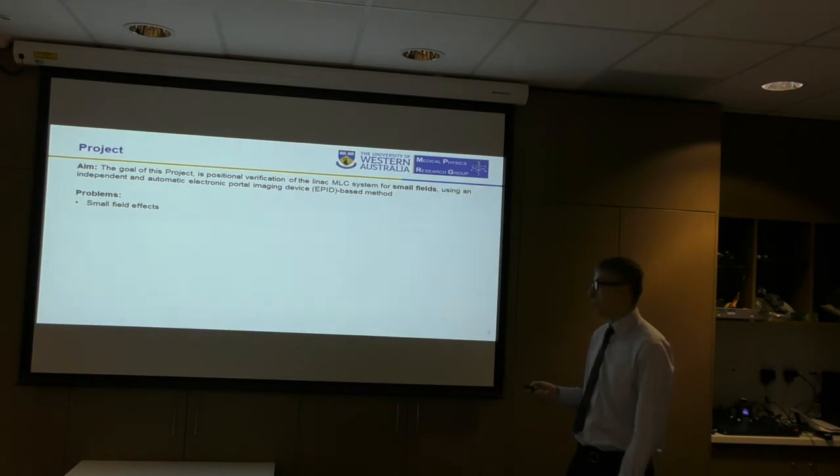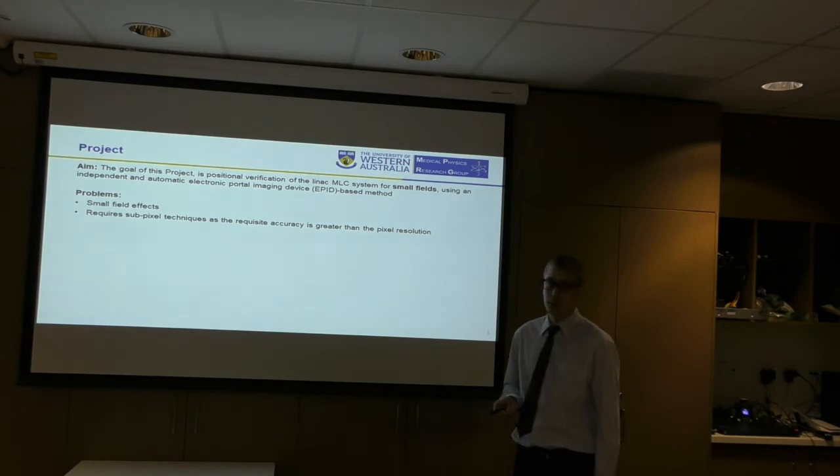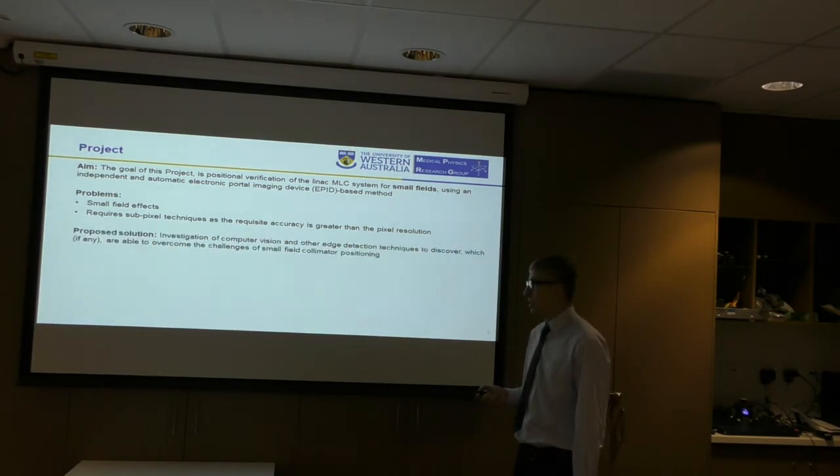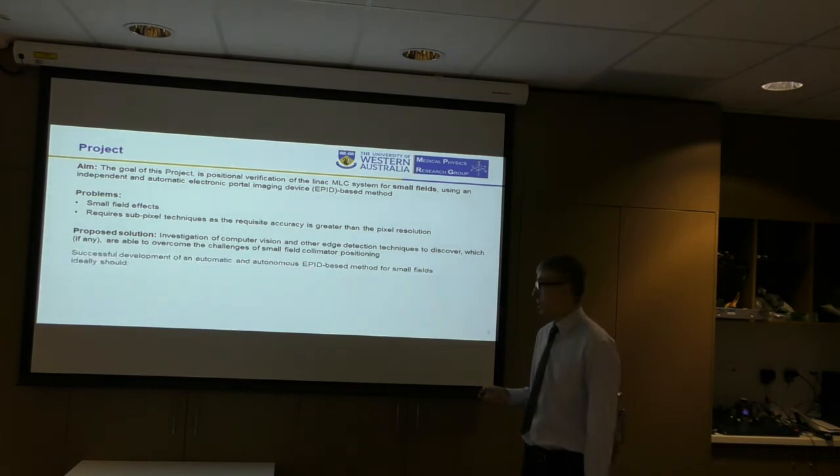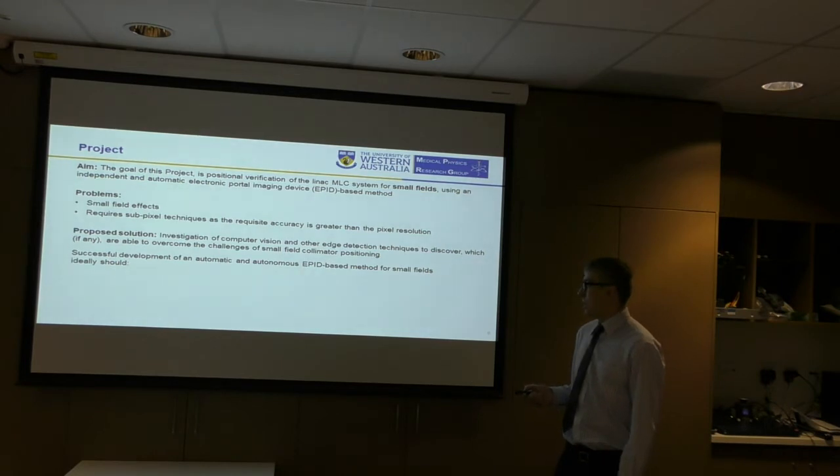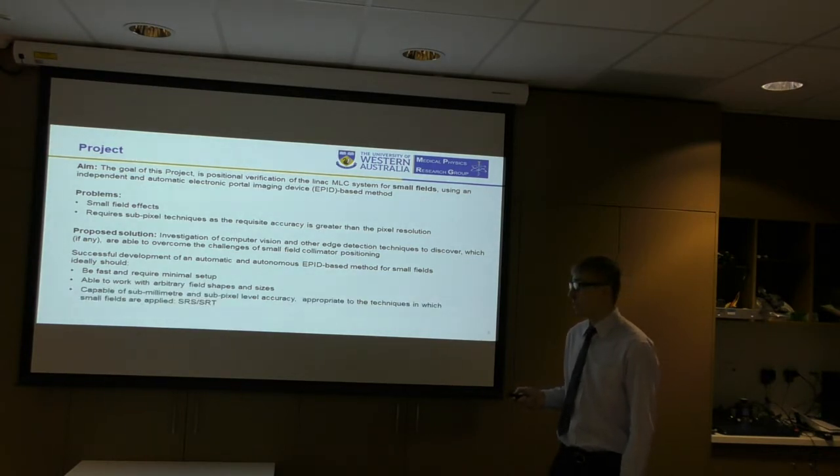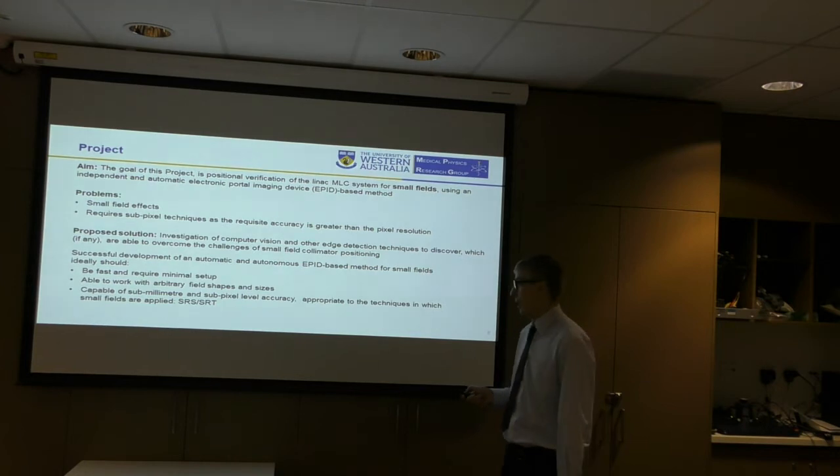The goal of this project is positional verification of the LINAC's multi-leaf collimator system for small fields, using an independent and automatic electronic portal imaging device-based manner. Problems? As mentioned, small field effects. Also, sub-pixel techniques are required as the needed accuracy is greater than the pixel resolution. The solution that we tried was to investigate computer vision and other edge detection techniques to discover if there are any that are applicable to small field collimator position. What does the solution look like? Ideally, it should be fast and a requirement also to be able to work with arbitrary field shapes and sizes, and capable of sub-millimeter and sub-pixel level accuracy appropriate to the techniques in which small fields are applied.